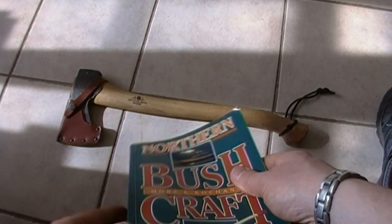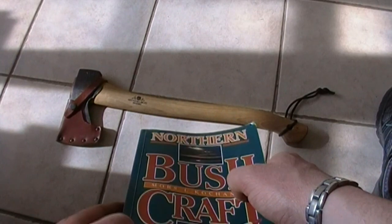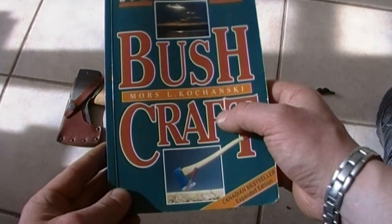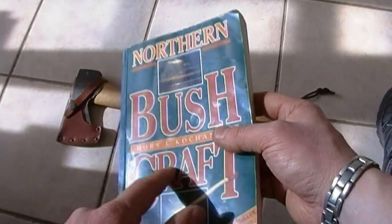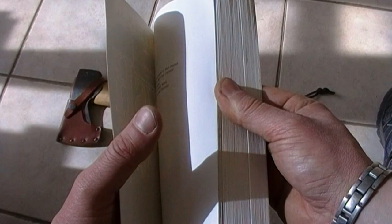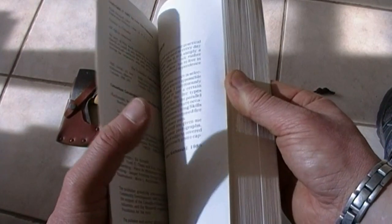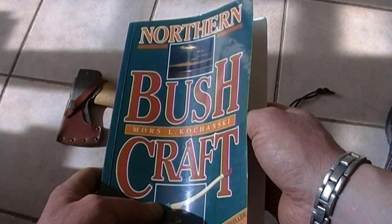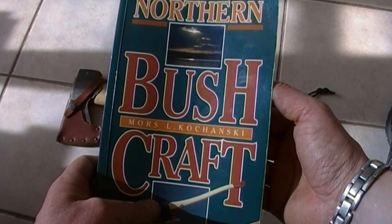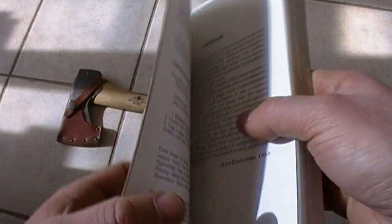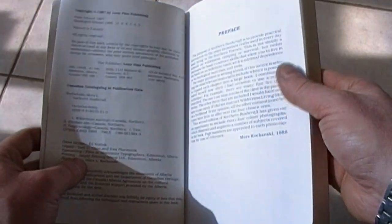You can see behind in the background here is my Gransfors Bruks small forest axe. One of the reasons I got it was because of Morris. He covers a lot of axe craft in here. One of the stories I've heard, who knows how reliable the source is, says that Morris wouldn't even go to the dentist without his axe. Everywhere he went, he had his axe. So, maybe that's a little obsessed. Maybe that's a man who knows what he likes.